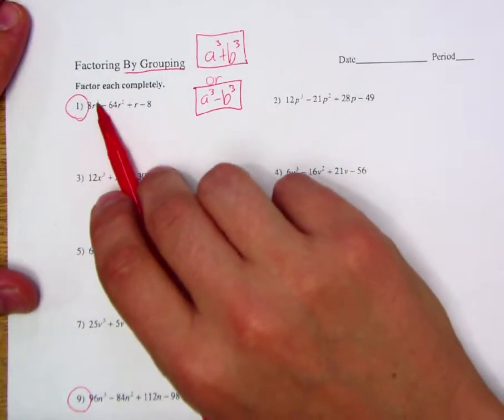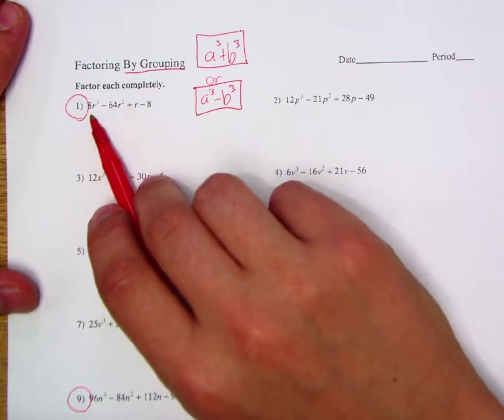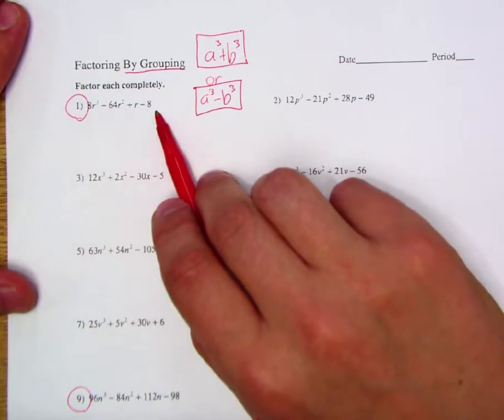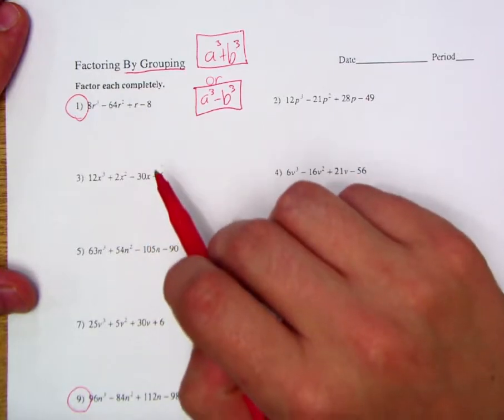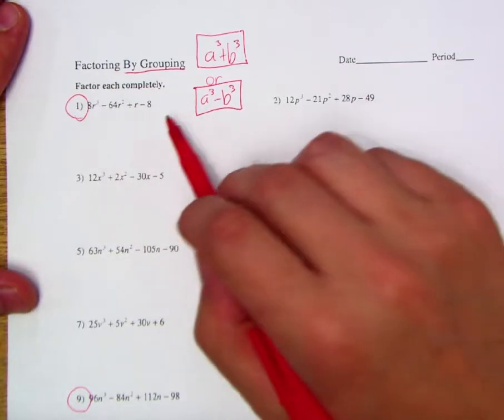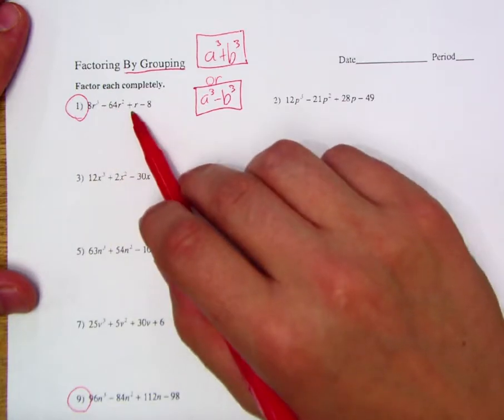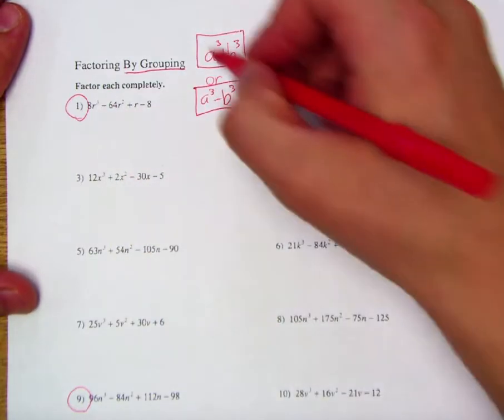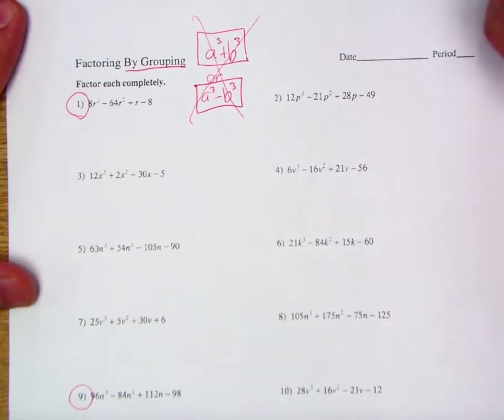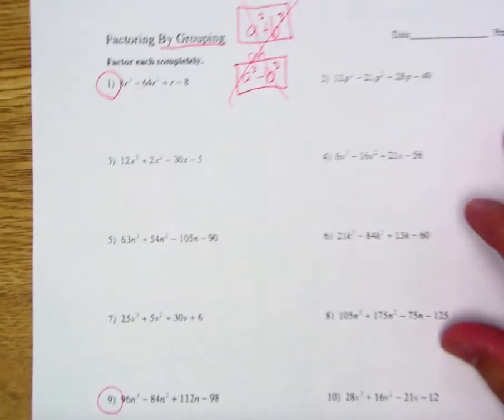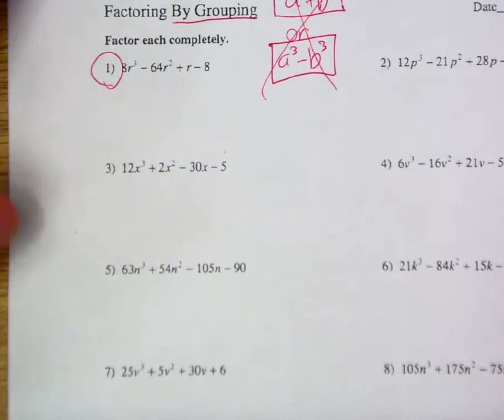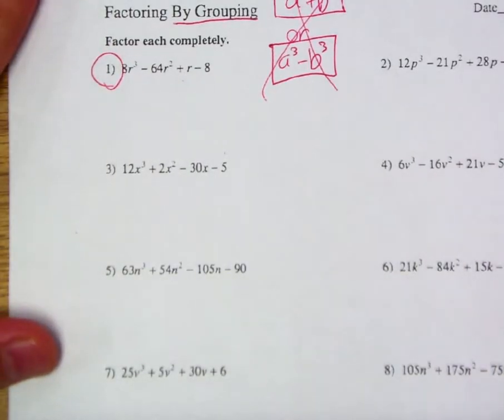Now, I realize some of you may have said 8r³, well, that's 2r times 2r times 2r. Negative 8 is going to be -2 times itself three times. But these terms in the middle, there's no nice, easy way to get that. This has nothing to do with sum or difference of cubes. So instead, what I want to focus on here is what some of these terms have in common.